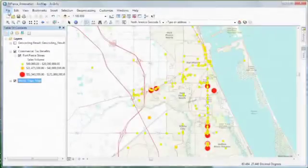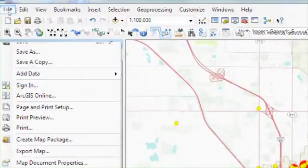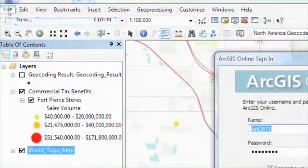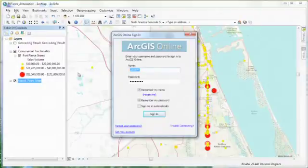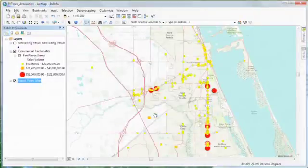To evaluate the annexation, I need to find a data set that represents the city boundary for Fort Pierce, Florida. Thankfully, I already belong to a group where this data might be available. Groups allow me to collaborate more efficiently with defined teams of people by sharing layers and analysis results.